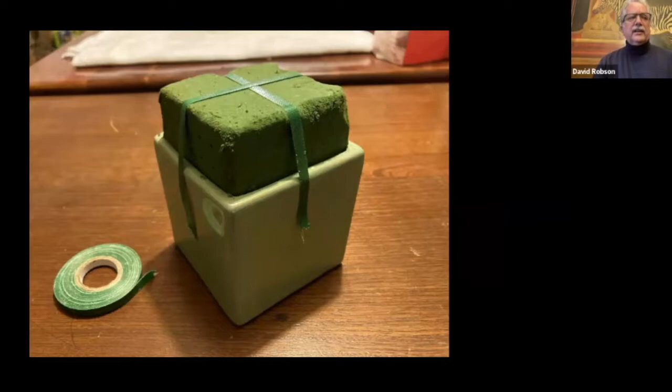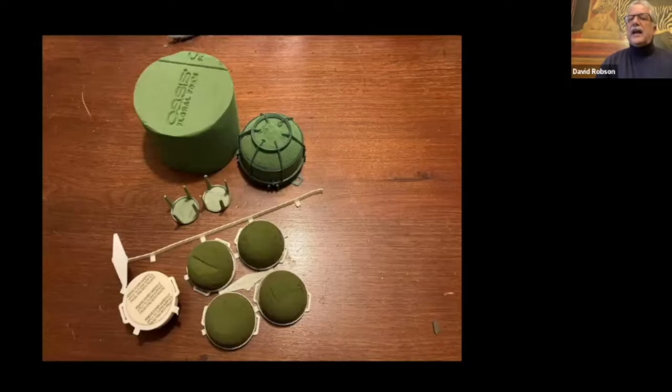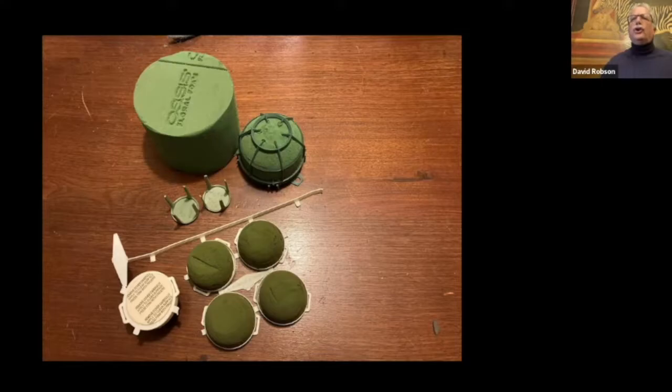If you're going to put it in a container, it's best to adhere it to the container using oasis tape. Oasis comes in lots of different types, lots of different shapes. We tend to think of the brick, but there are huge bricks that are maybe three or four, I should say four or six or eight bricks big that you can use for great big vases and mass arrangements.